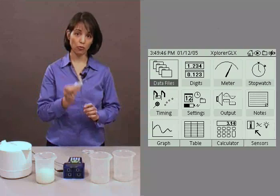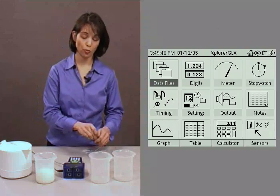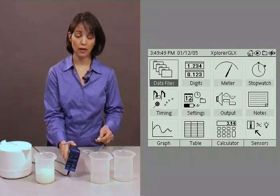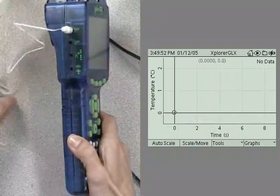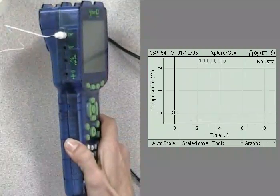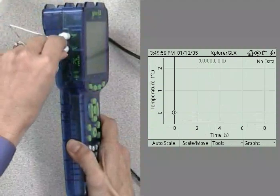First thing we're going to do is plug our first probe into temperature port 1 on the left side of the GLX.